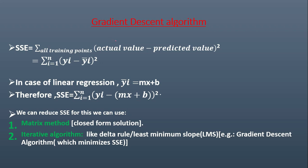Before I go into detail about gradient descent algorithm, I'll have to explain about the sum of squared errors. The sum of squared errors, in short form you represent as SSE, is actually the sum of all training points, actual value minus predicted value, the whole square.